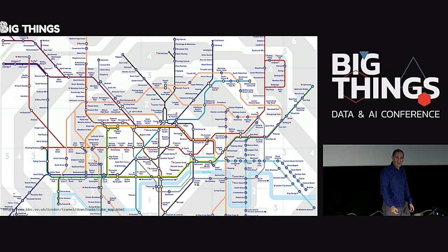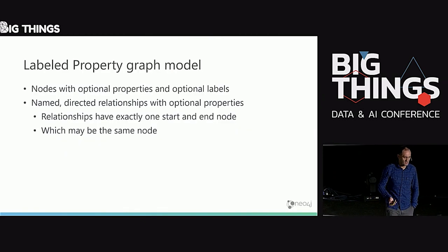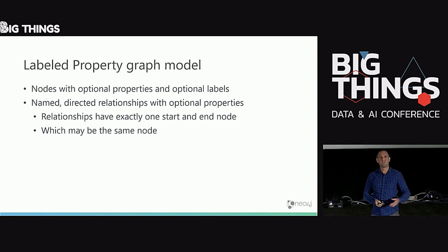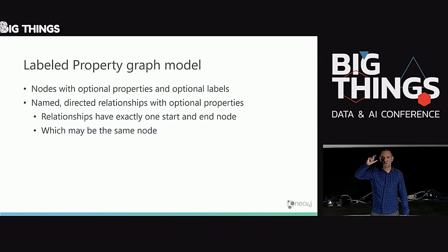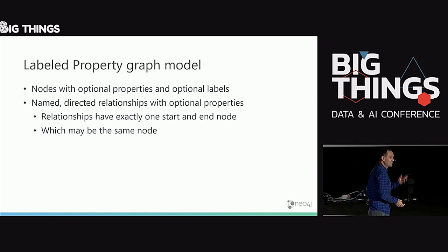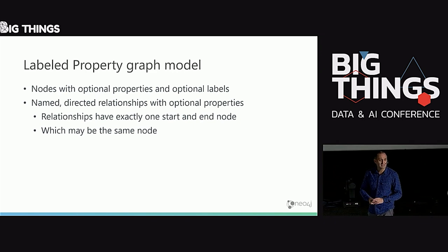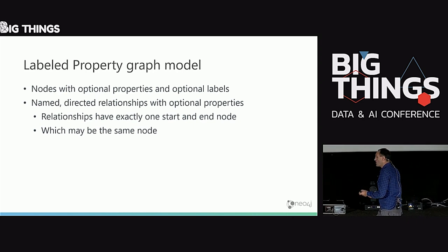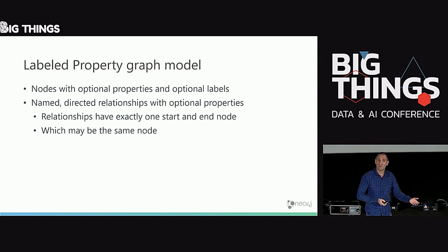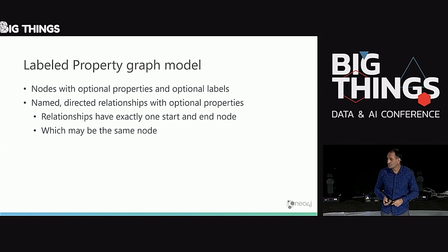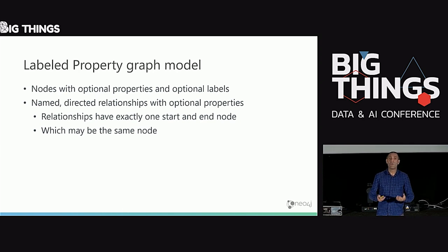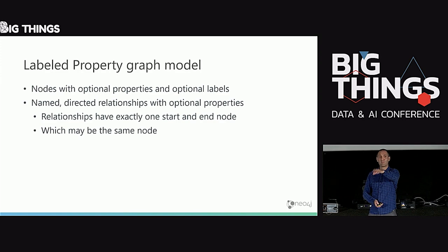Graphs are super simple as a data modelling technique — they are lovely to work with. The label property graph model, which has risen to prominence over the last decade, is ridiculously simple. When we learned databases at university, we had a book this thick with normal forms to learn. When you learn graphs, it's one slide. We have nodes — typically representing entities — we have properties as key-value data, and nodes may be labelled to indicate their purpose. We also have named directed relationships, which can also have properties. In the tube case, that might be travel time or distance between stations. Relationships have exactly one start node and one end node. You are now all graph experts.